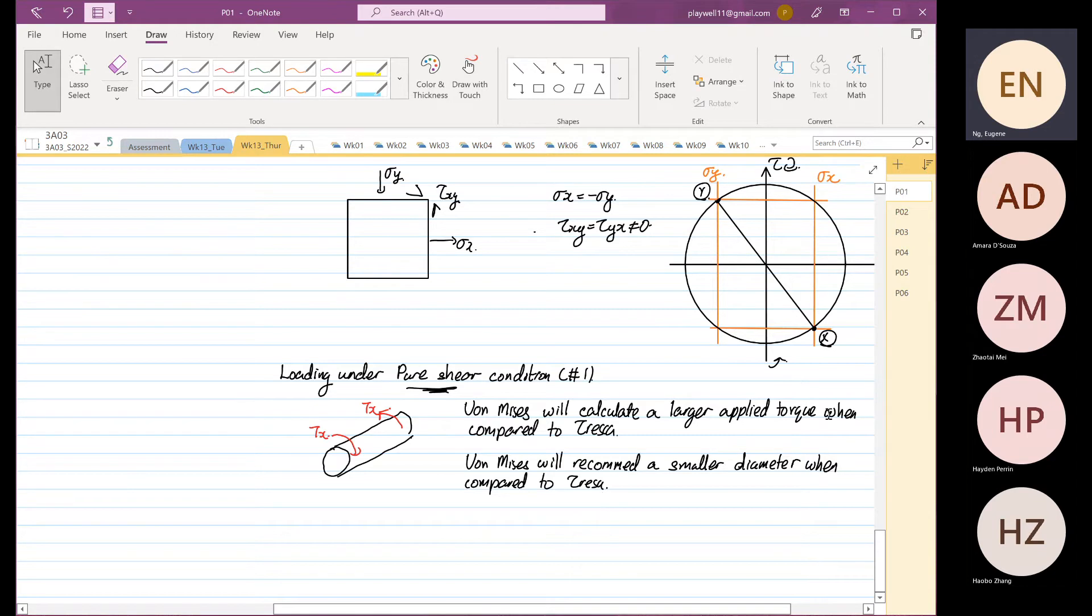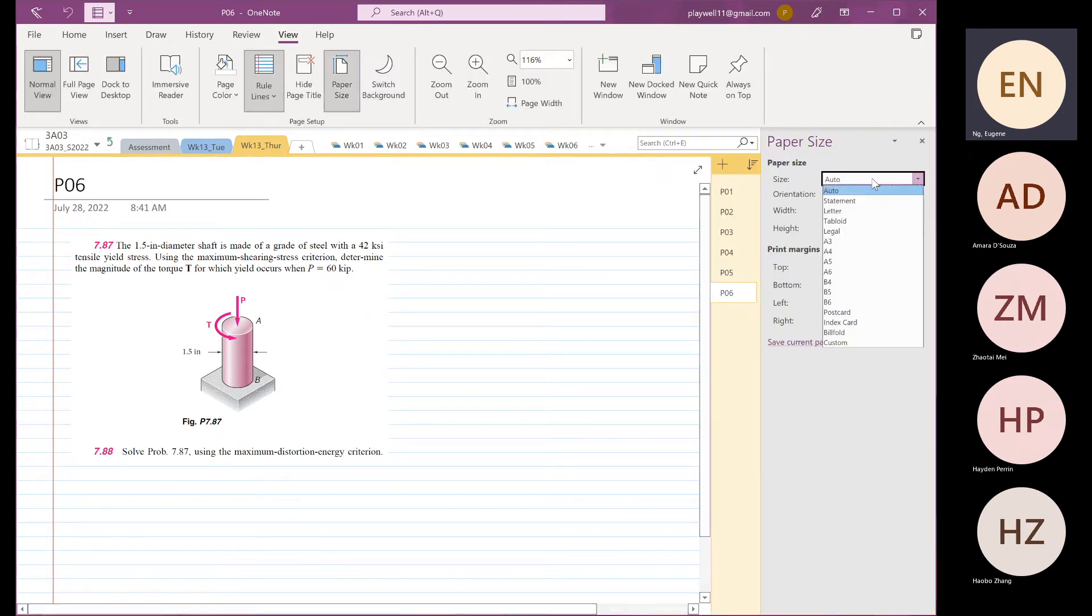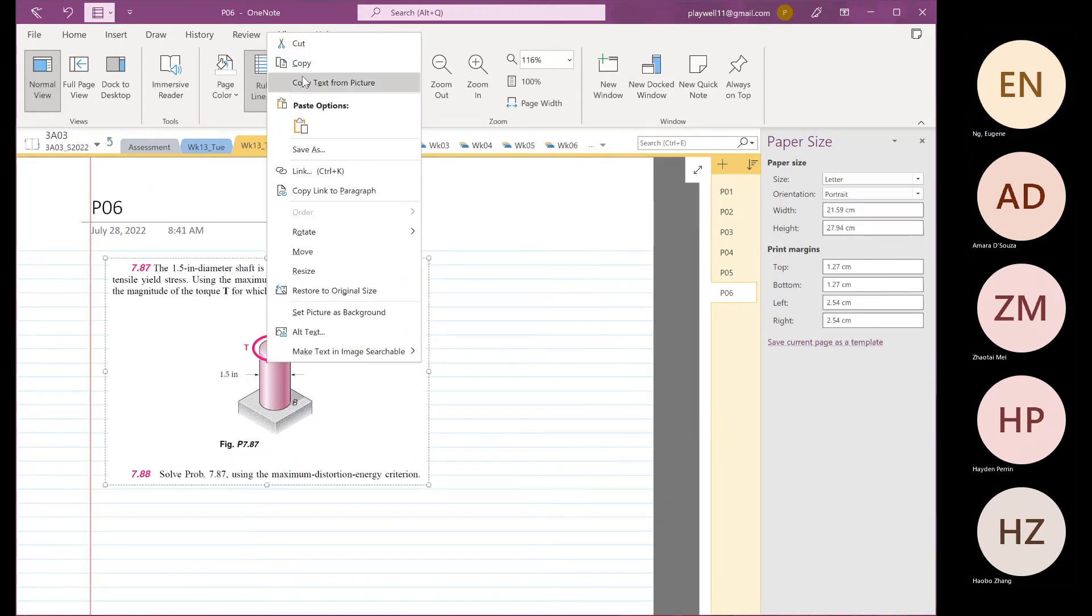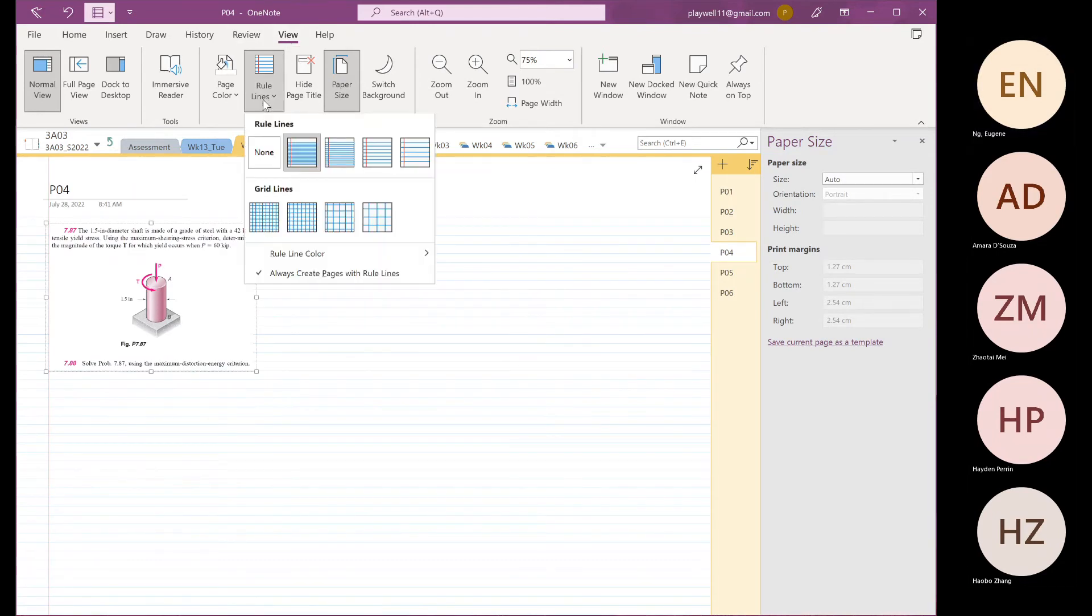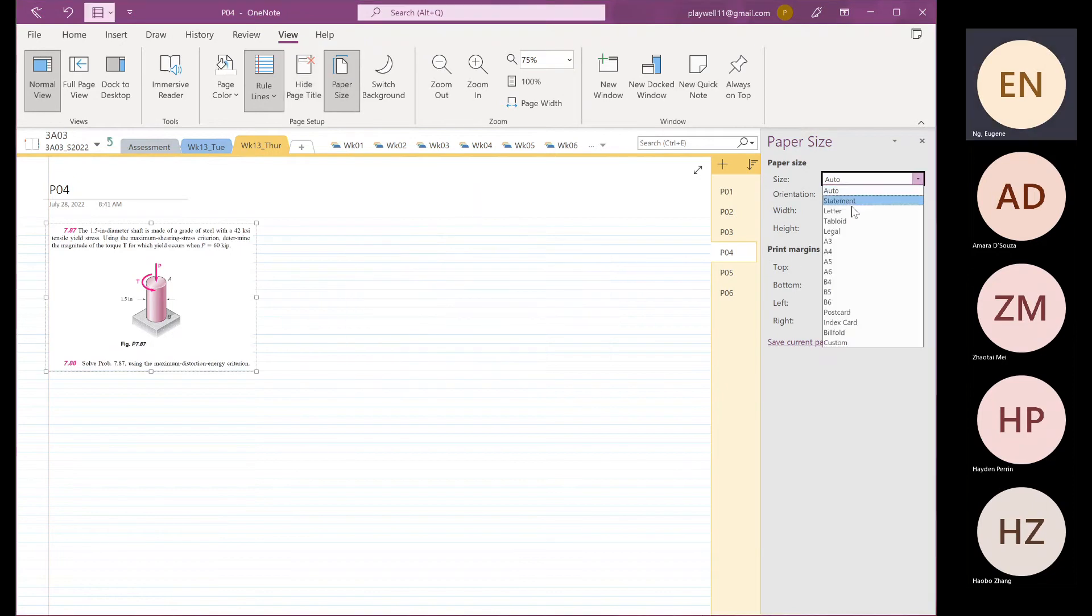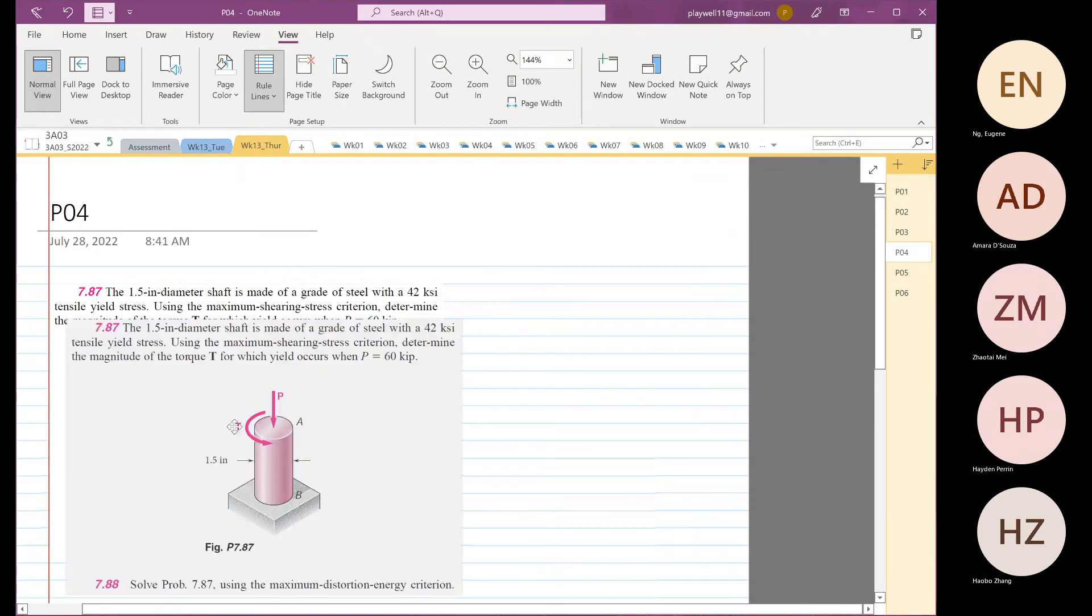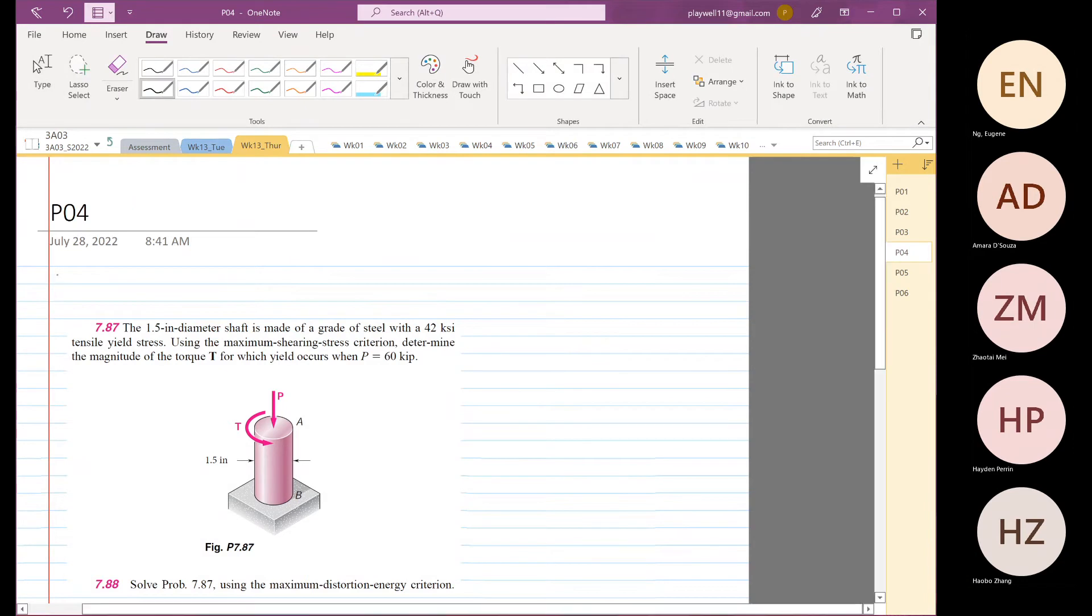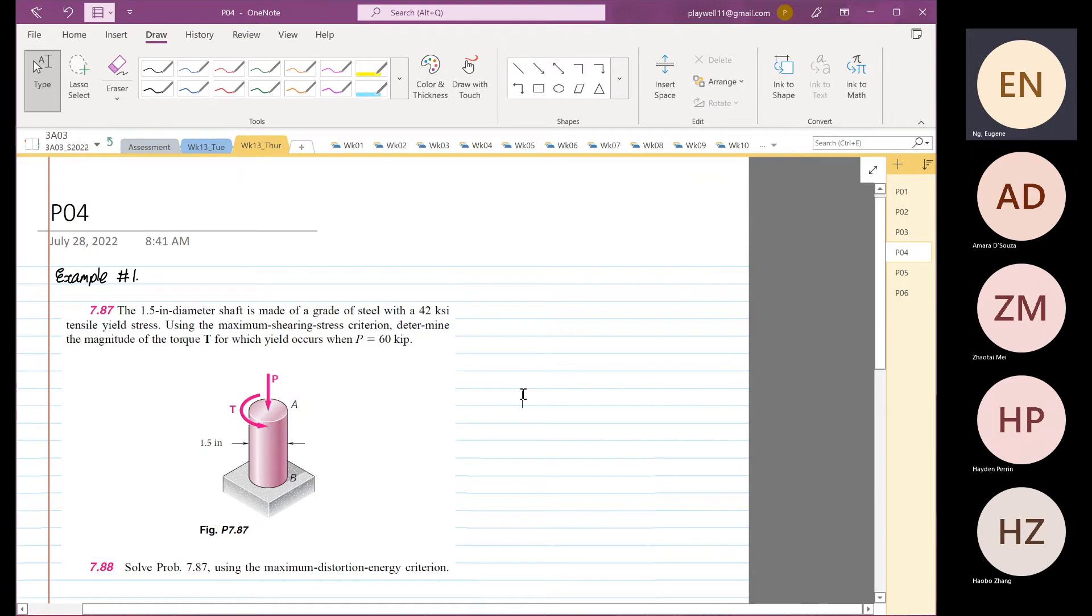I have posted this on Avenue to Learn. We are going to do this example. This is our example number one. The diameter of this shaft is 1.5 inches, made of steel with a tensile yield strength of 42 ksi.